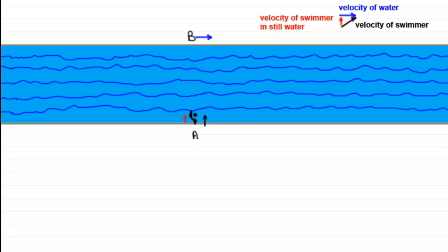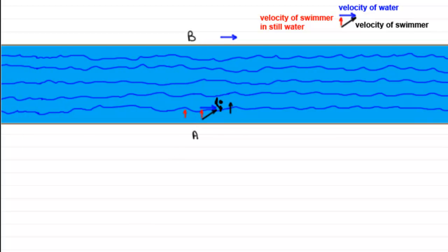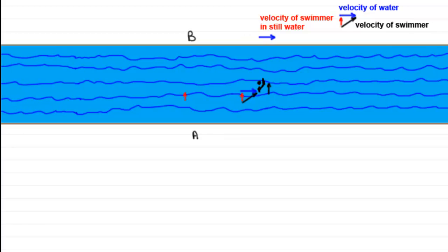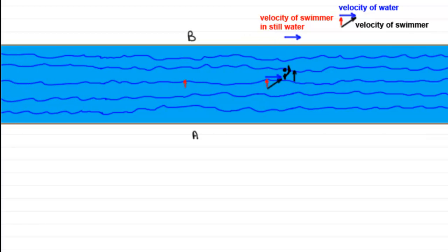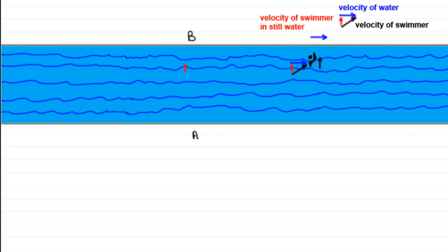Let's just run that through again. So we can see now that as the swimmer starts off heading towards B, then the combination of those two vectors makes him go at this diagonal course downstream.